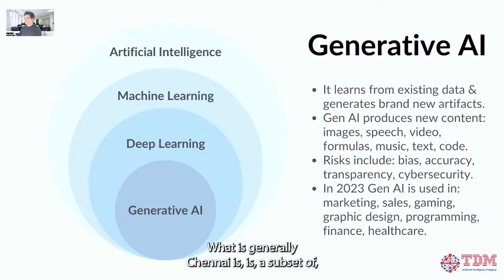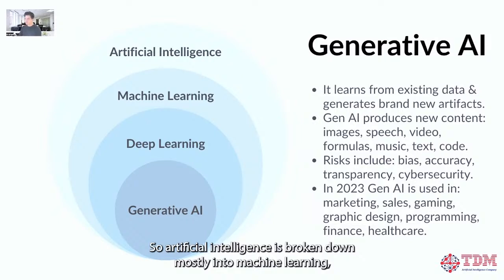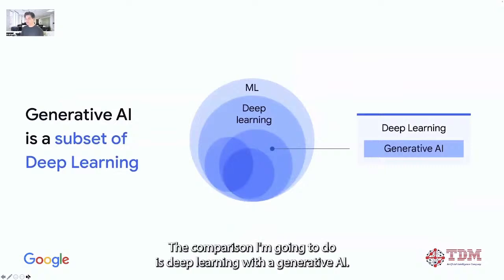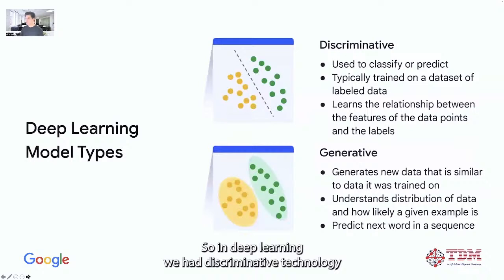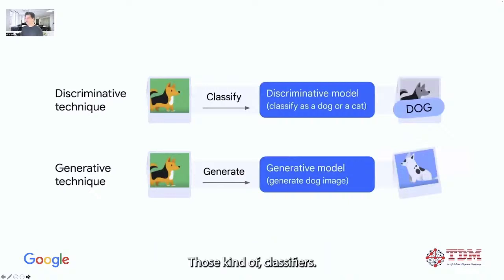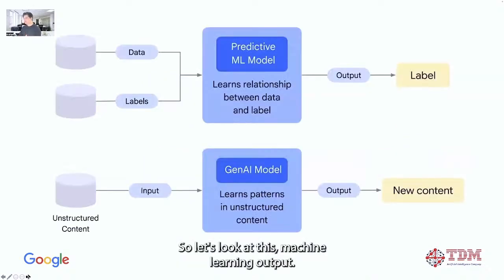What is Gen AI? Gen AI is a subset of deep learning and from the discipline of artificial intelligence. AI breaks down mostly into machine learning, which got very popular, then deep learning, and now generative AI. In deep learning, we had discriminative technology — classifiers that say 'is it a cat or a dog?' Generative AI trains models on unstructured data and generates new content.